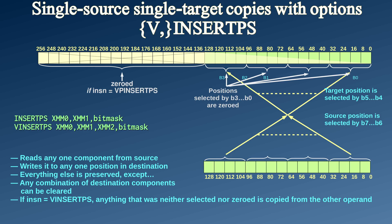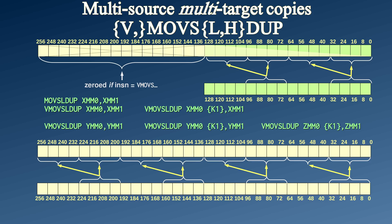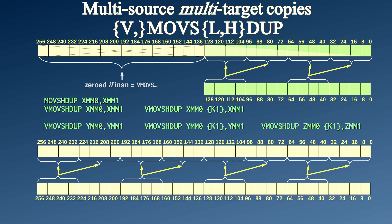But we are only getting started. All of the previous instructions were single source, single target moves. The broadcast operation takes the lowest value from the source vector register, and populates the entire target register with copies of the same value. This is very handy if you need the target register to be nothing but copies of some particular value. If you need more fine-grained control, there is MOVSLDUP, which divides both the source and target registers into halves and does the broadcast operation for both halves individually. The MOVSHDUP instruction is almost the same, but it takes the high value from the source register, not the low one.